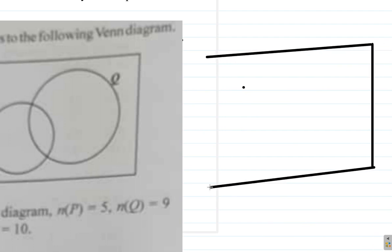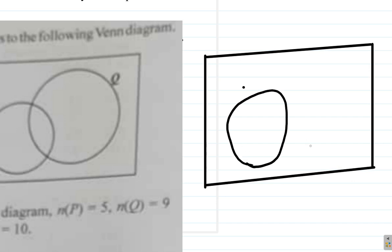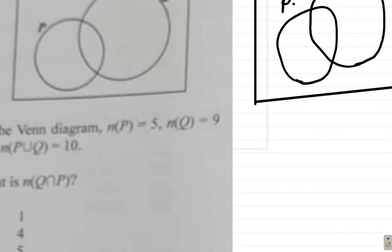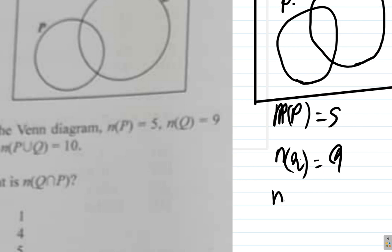So you have the Venn diagram here and you have the circle for the thing there, the subsets P and Q. Now here, in the Venn diagram, the number in P is 5, the number in Q is 9, the number in P union Q is 10. What is the number in P intersect Q?